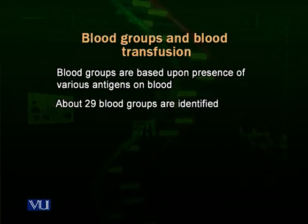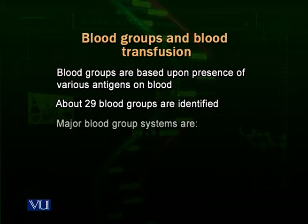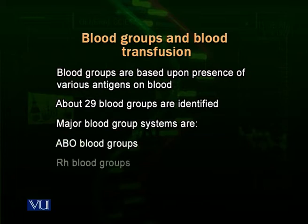Now we talk briefly about blood groups. About 29 different types of blood group systems are found in human beings, but two are very important: one is the ABO system and the other is the RH system.